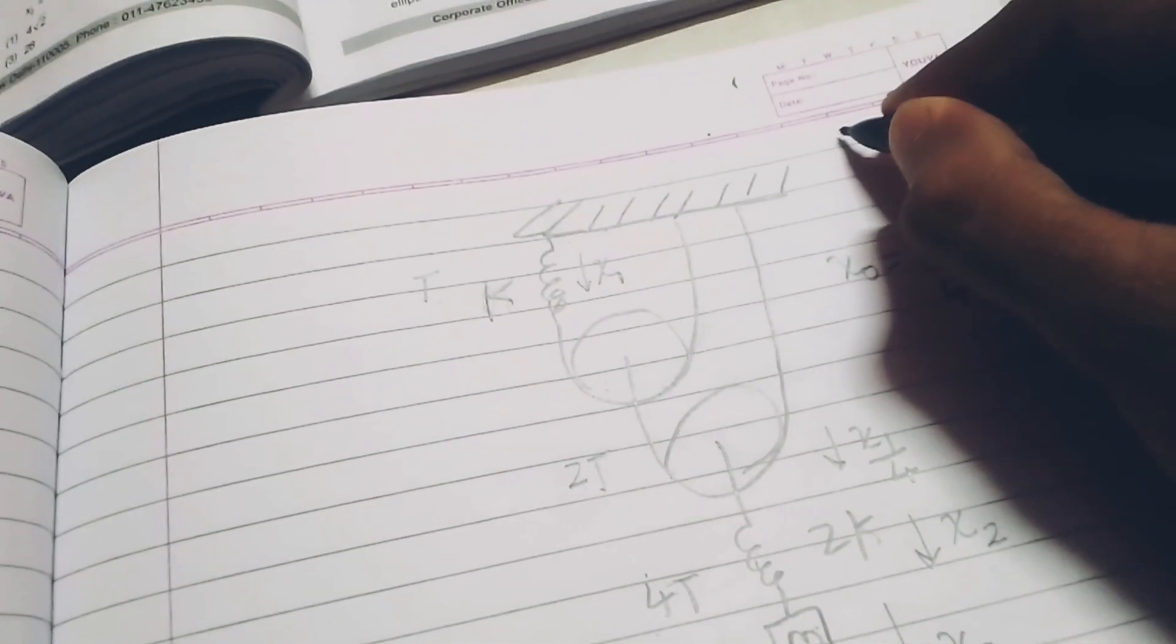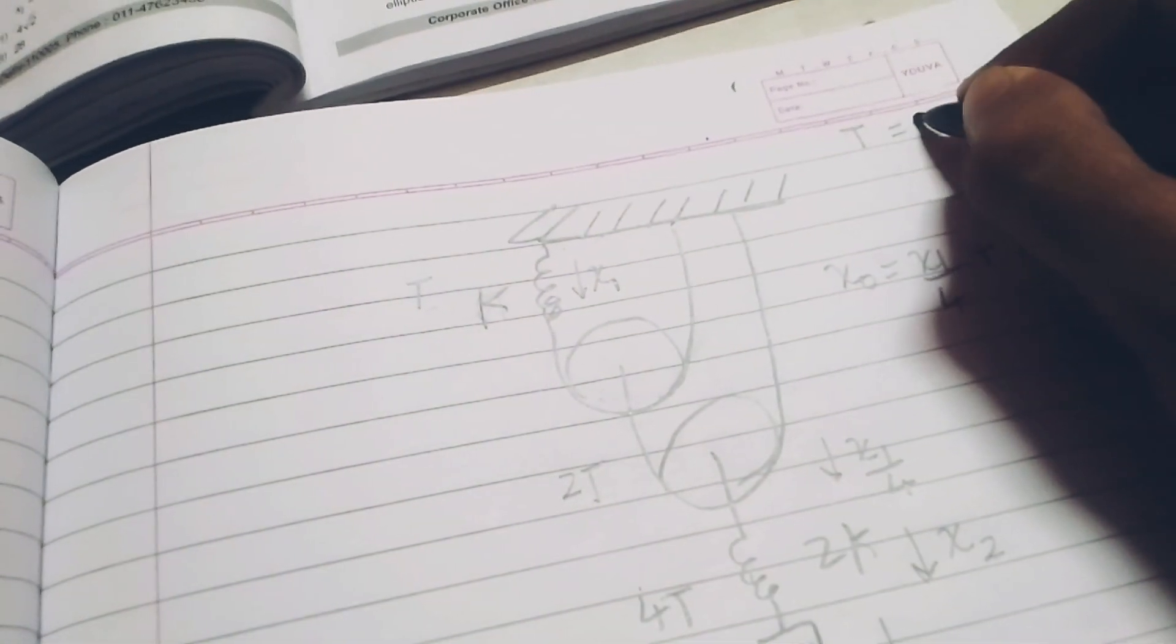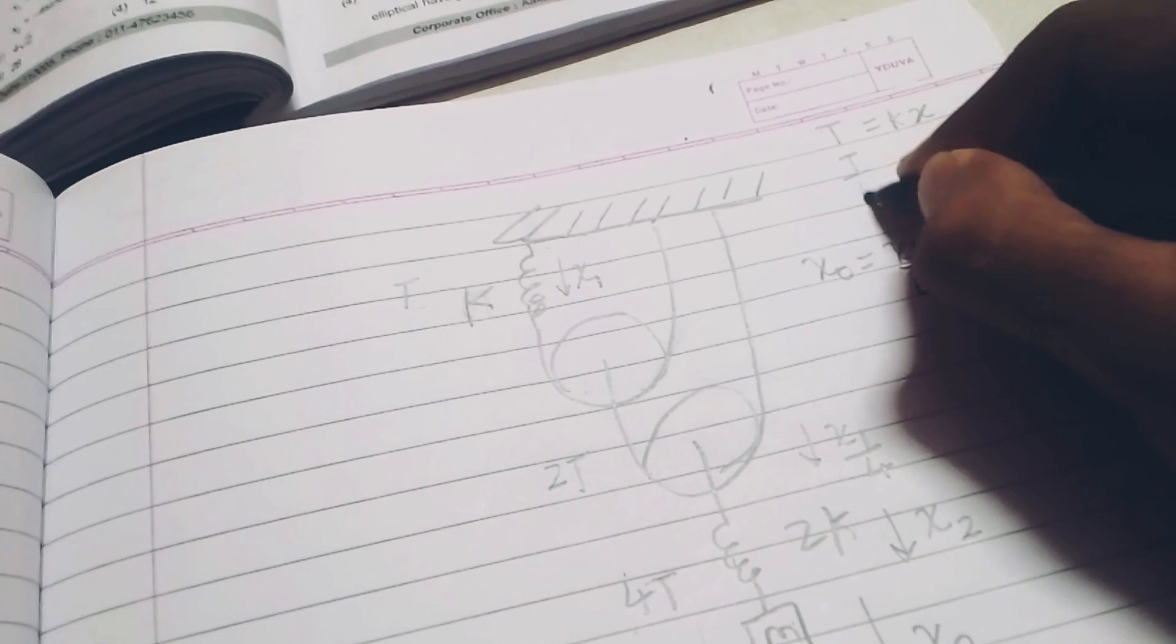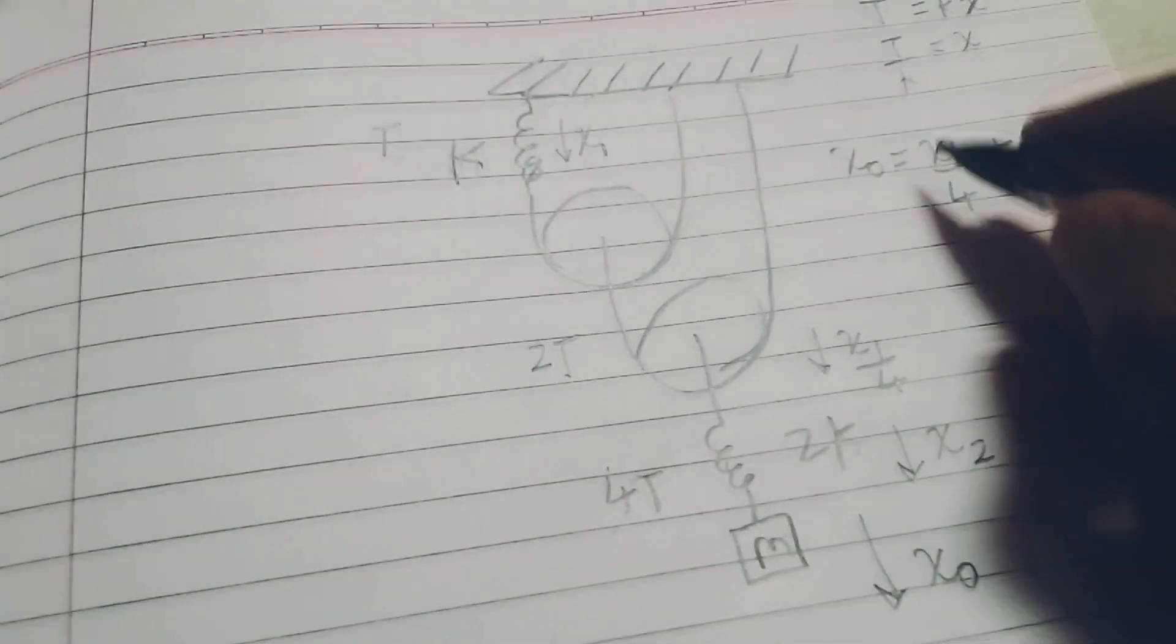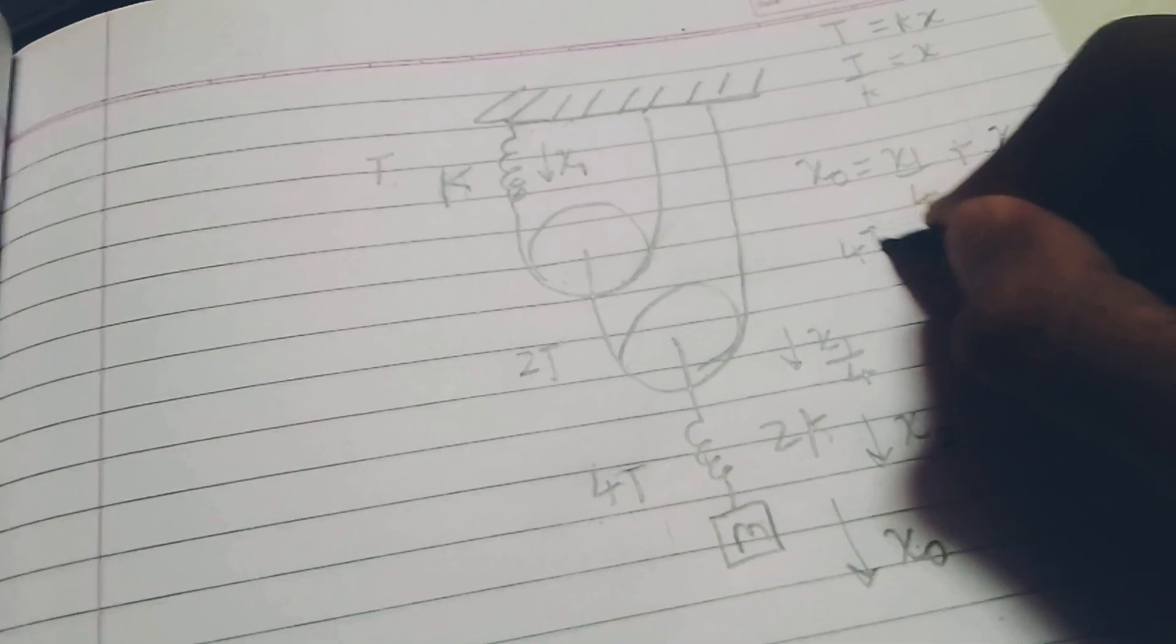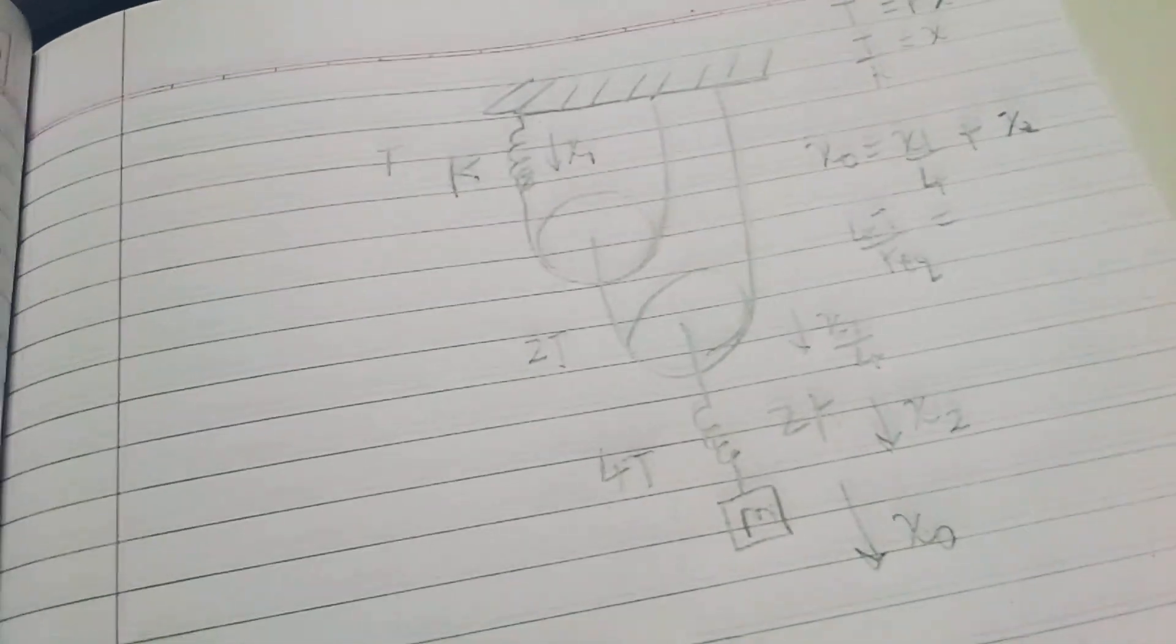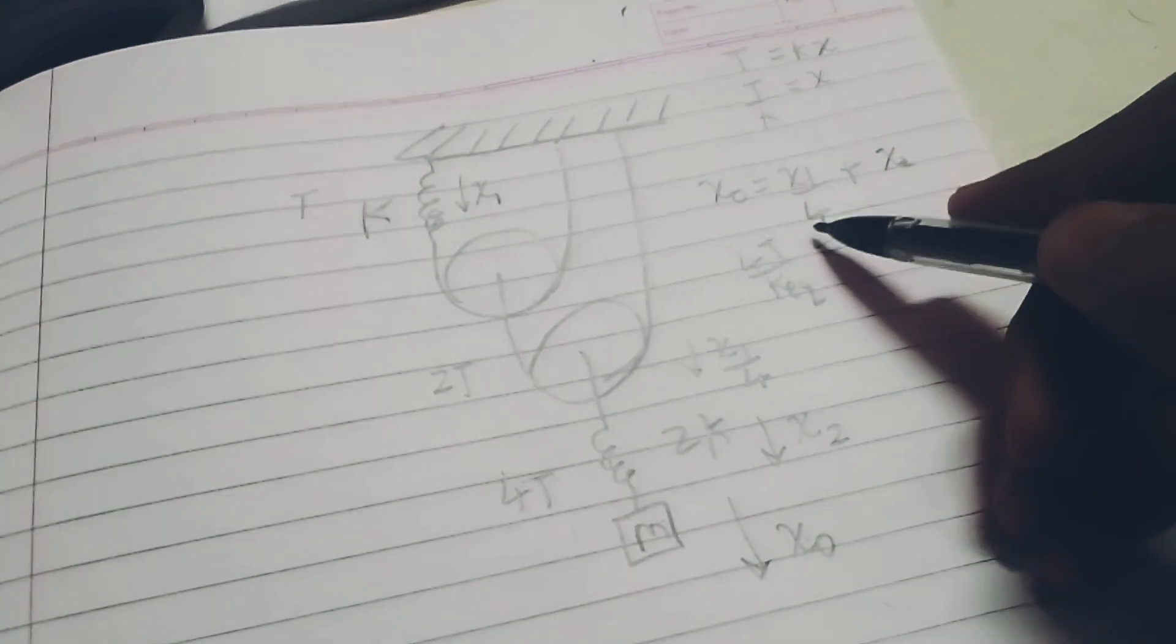You know that tension is equated to kx. Thus, I am going to exchange x with tension by k at that given point. If I try to write about x0, then here tension is 4T. So, I have 4T by k equivalent is equated with x1 by 4.